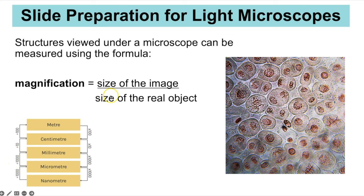Make sure both measurements are in the same units and that will give you your magnification. Sometimes you may need to work out the size of the real object, in which case you'd rearrange the formula: size of real object = size of image ÷ magnification.